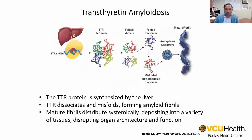Transthyretin amyloidosis, or TTR amyloidosis, is a disease of protein misfolding, where the transthyretin protein, which is synthesized in the liver as a tetramer consisting of four identical monomers, disassociates, misfolds, forms fibrils, and these fibrils form clumps of amyloid deposits which can go to different organs to cause damage and destruction.